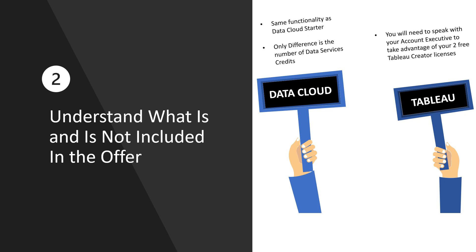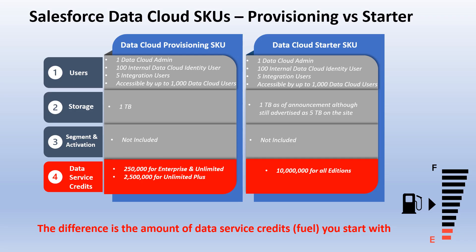The important difference, though, is that when Salesforce hands you the keys to your shiny new car, you'll just not be getting a full tank of gas. The Salesforce Data Cloud comes with the same user licenses and permission sets, and with the same amount of storage as the Data Cloud Starter SKU that Salesforce charges $108,000 for. Segmentation and activation is not included in either SKU, so if you have marketing use cases, you'll need to add on the Marketing Cloud SKU. The Data Cloud is powered by Data Service credits. The Starter SKU comes with 10 million credits, whereas the Data Cloud Free SKU comes with either 250,000 or 2.5 million credits, depending on whether or not you have the Unlimited Plus Salesforce Edition.